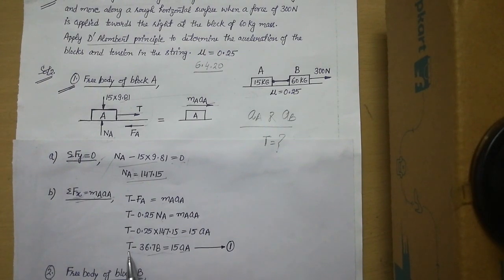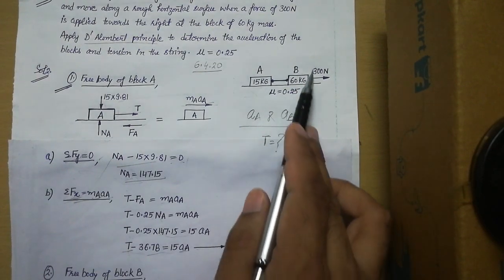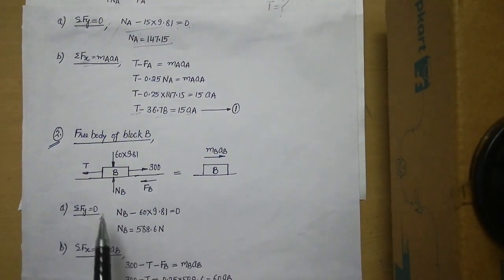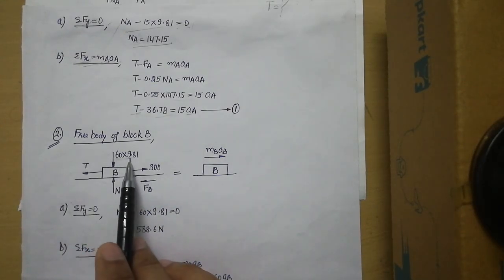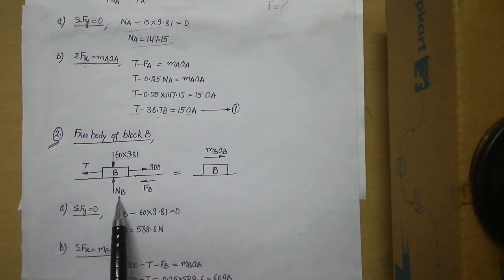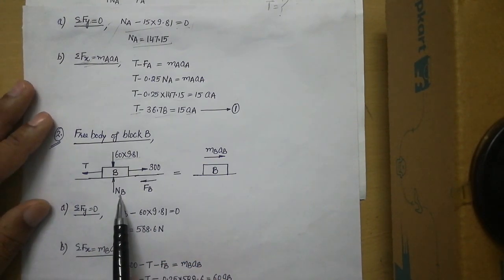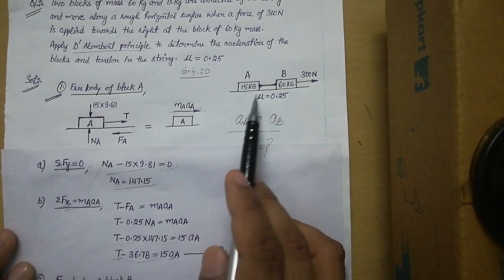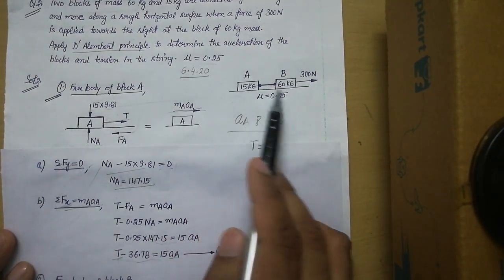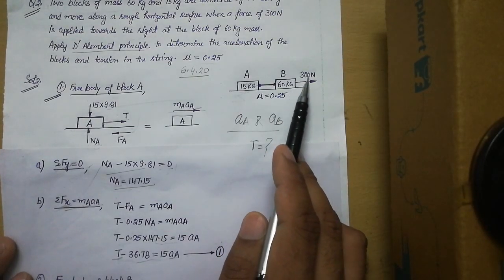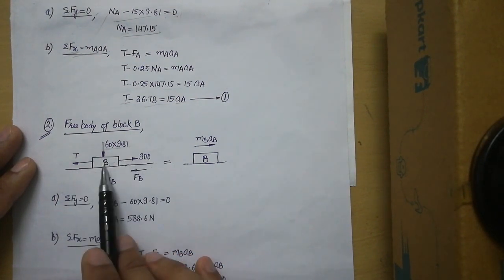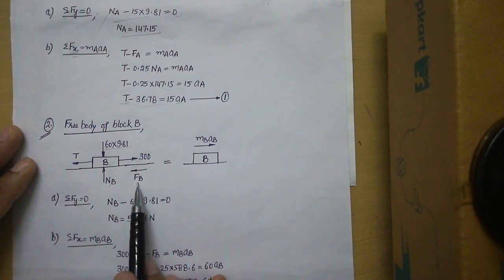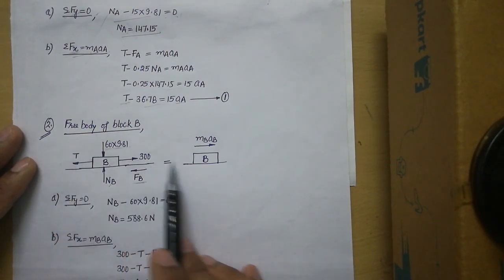Equation 1 has two unknowns so we cannot solve it alone. Now for the free body of block B on the horizontal plane: its weight is 60 × 9.81 downward, with normal pressure NB upward. Two more forces act on block B — tension T towards the left (due to block A) and the applied 300 N force towards the right. Since block B moves right, friction FB acts in the opposite direction.